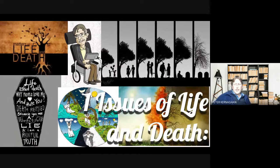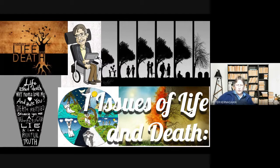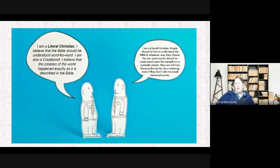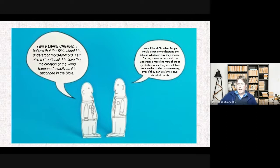Moving on to Issue 1: end of life issues, looking at the origins of the universe. Some Christians are literal Christians — they believe the Bible should be understood word for word: 'I'm a creationist; I believe creation happened exactly as described in the Bible.' Other Christians are liberal or non-literalist, believing stories should be understood as metaphors or symbolic stories — still true because they carry meaning, even if they don't refer to actual historical events.